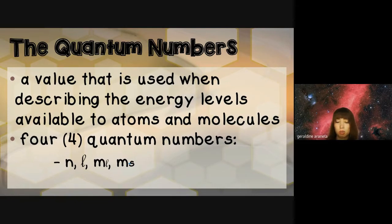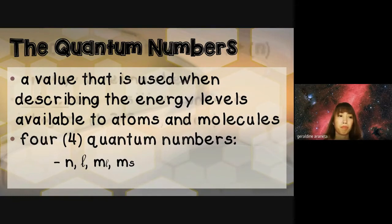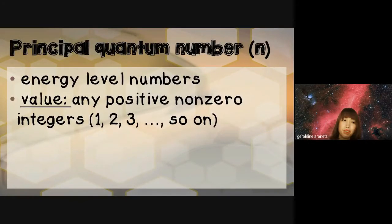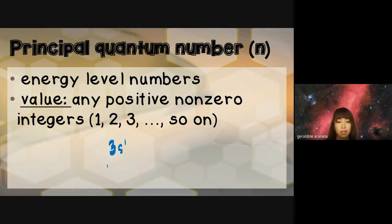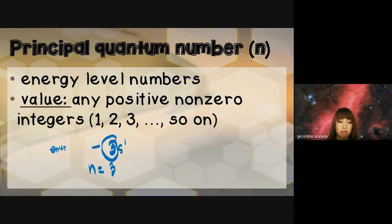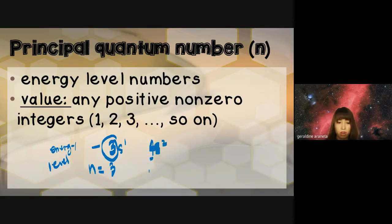Let's start with the first quantum number, the principal quantum number or N. This represents the energy level number, and it is any positive non-zero integer. For example, if we have 3S1 as our electron configuration, our N will be 3, because that numerical part is the energy level. So if the electron configuration is 4S2, then our N will be 4.